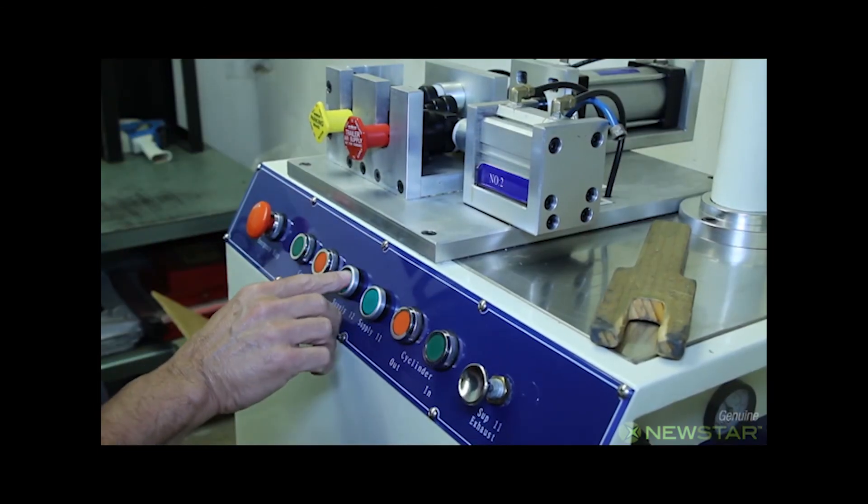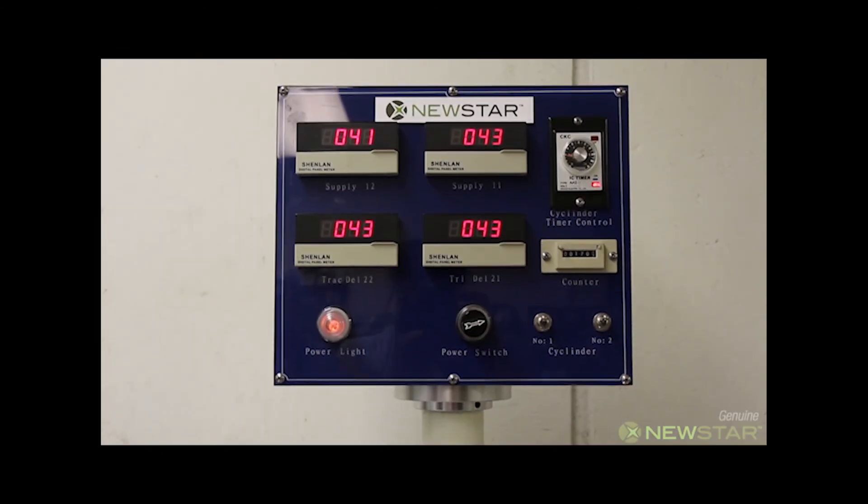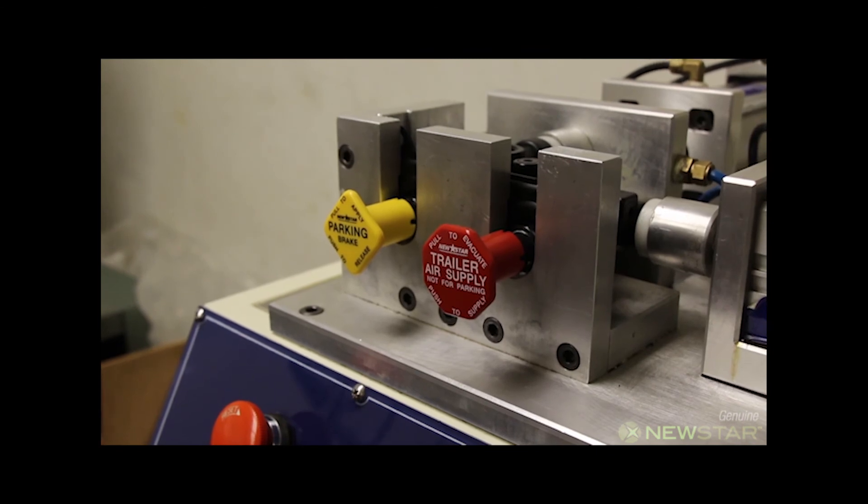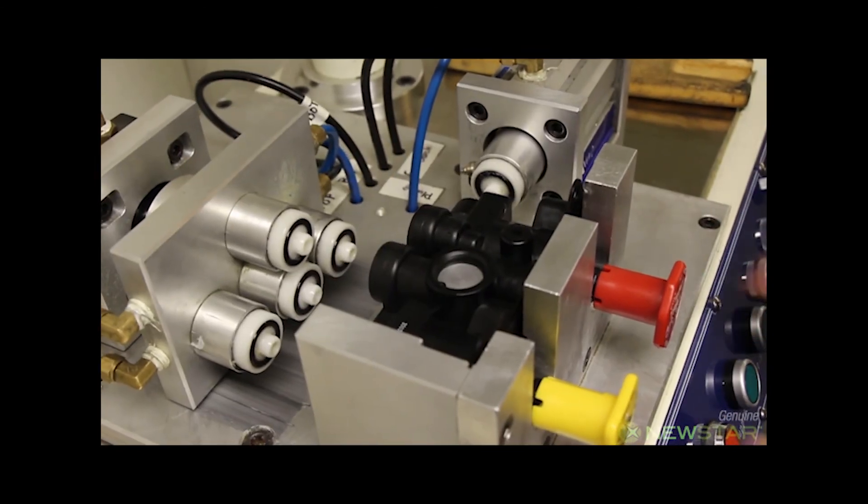Pressure is released in the system. Trailer supply must release at approximately 40 psi. Tractor supply must release at approximately 20 psi. The test is completed and the valve is passed.